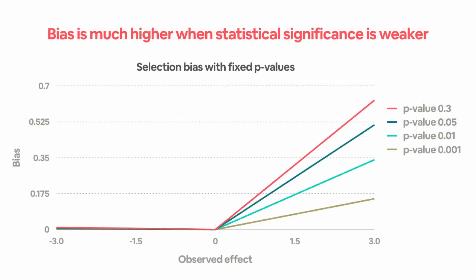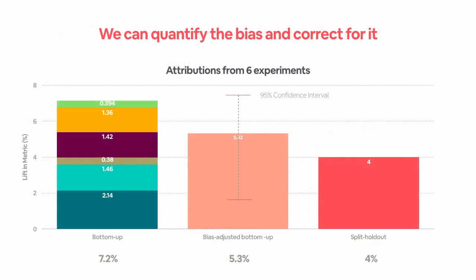Naturally, bias is higher when statistical significance is lower. This plot shows the expected bias at various fixed p-values. In our paper, we formulate the bias and propose a novel way to correct for it. We also construct a confidence interval around the bias-corrected estimate.